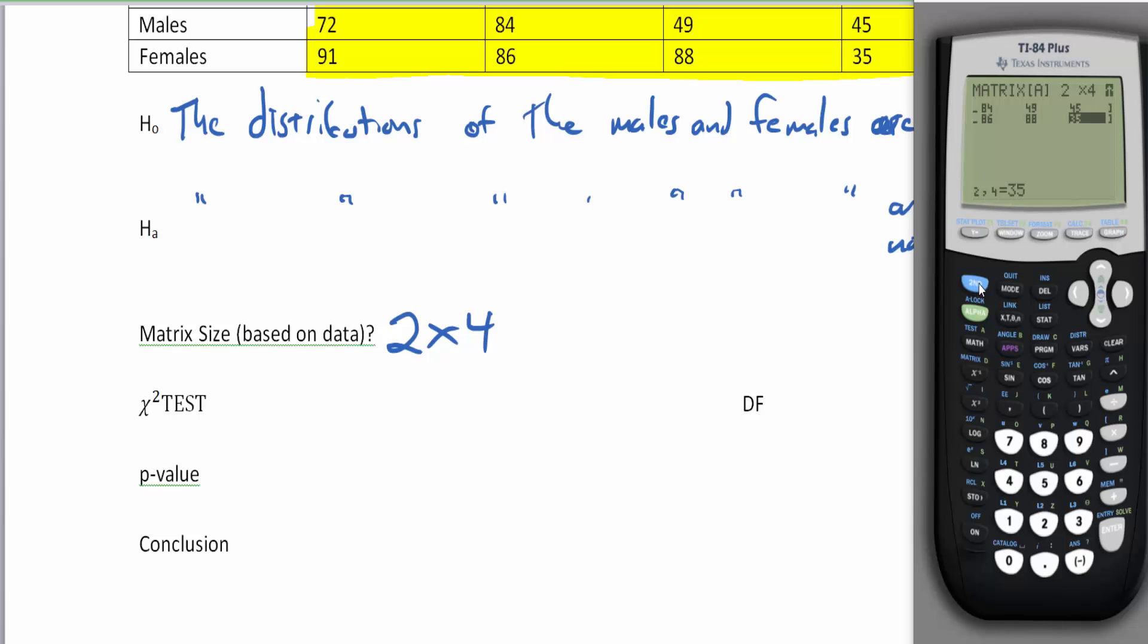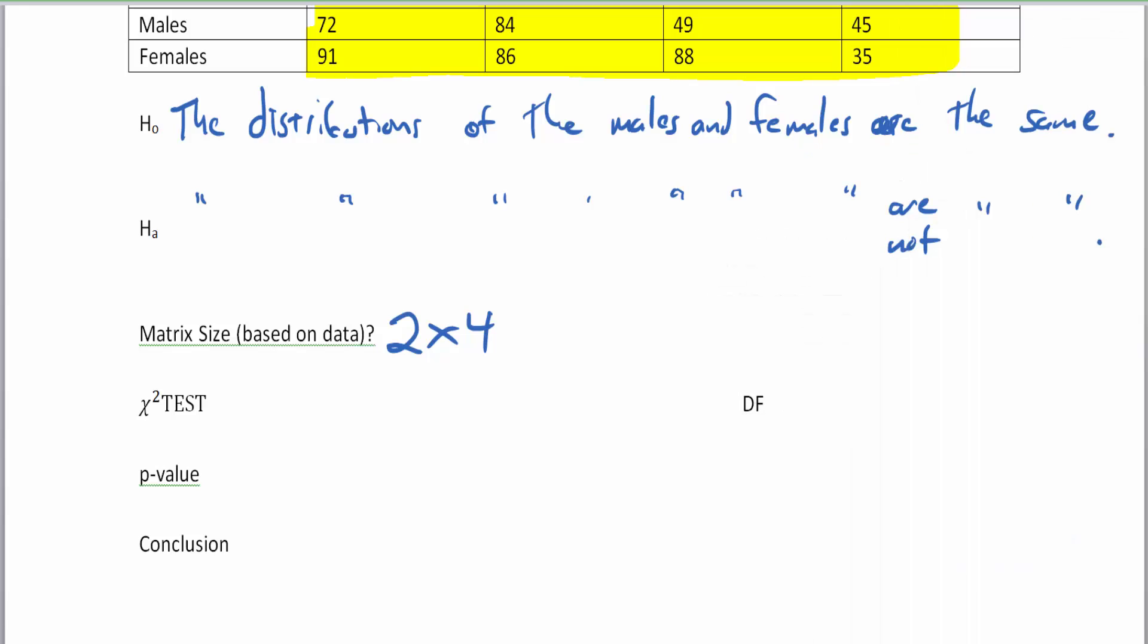I click second and mode to get to a clear screen, or go stat and move over to tests. I can scroll up from the bottom and find my chi-squared test very quickly. My observed is in A, the expected will be computed in B, then click on calculate. There's my chi-squared test value, 10.13. My p-value is 0.0175, or 1.75%, and three degrees of freedom.